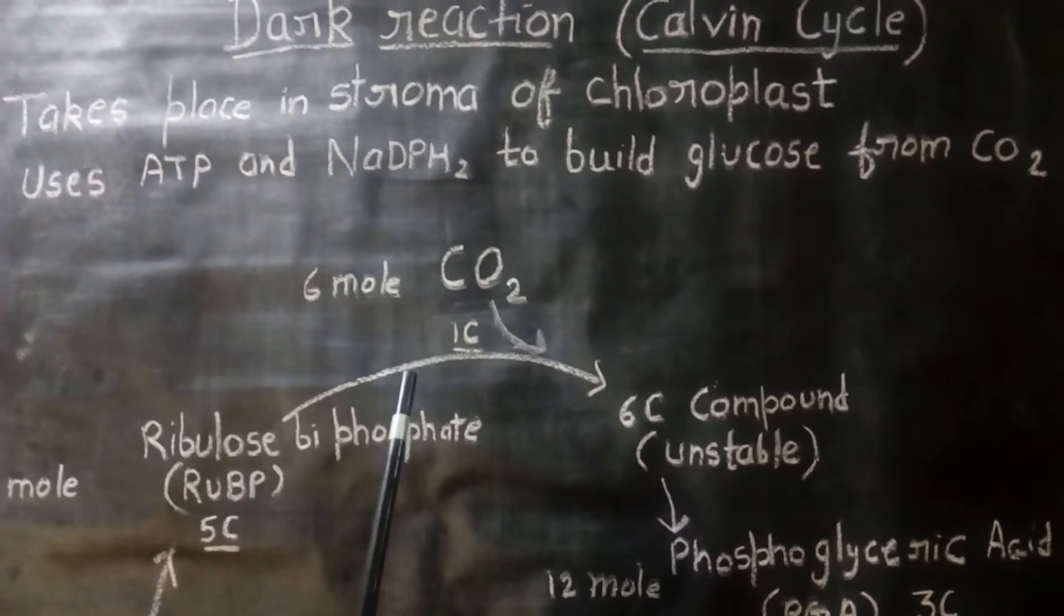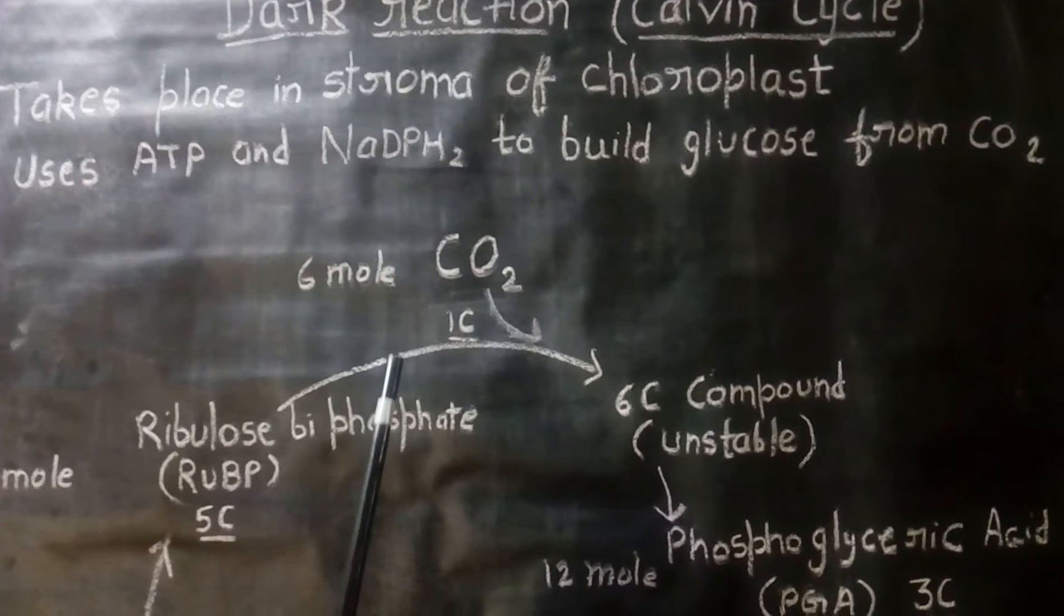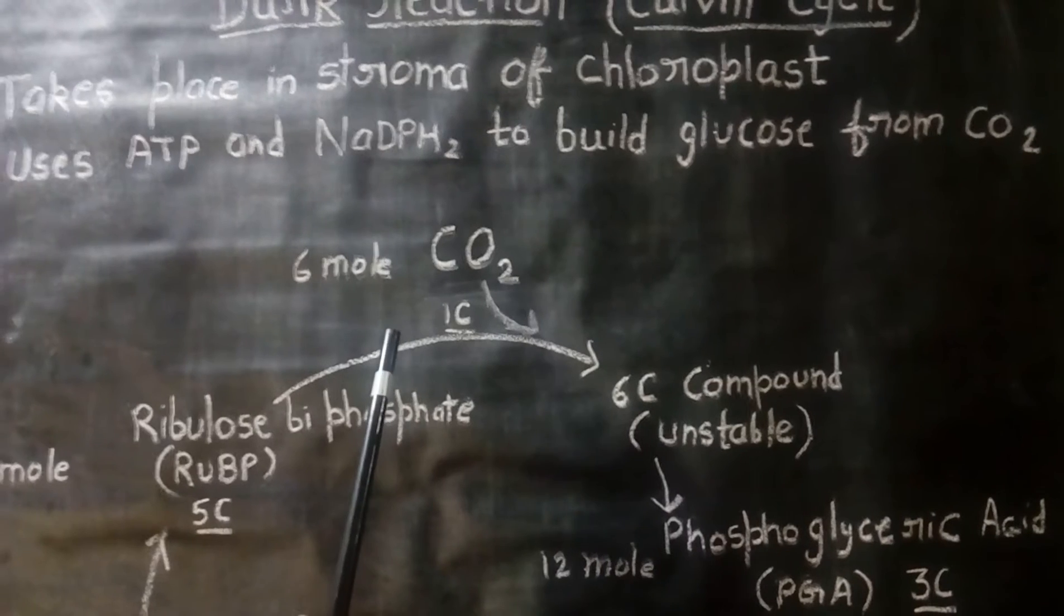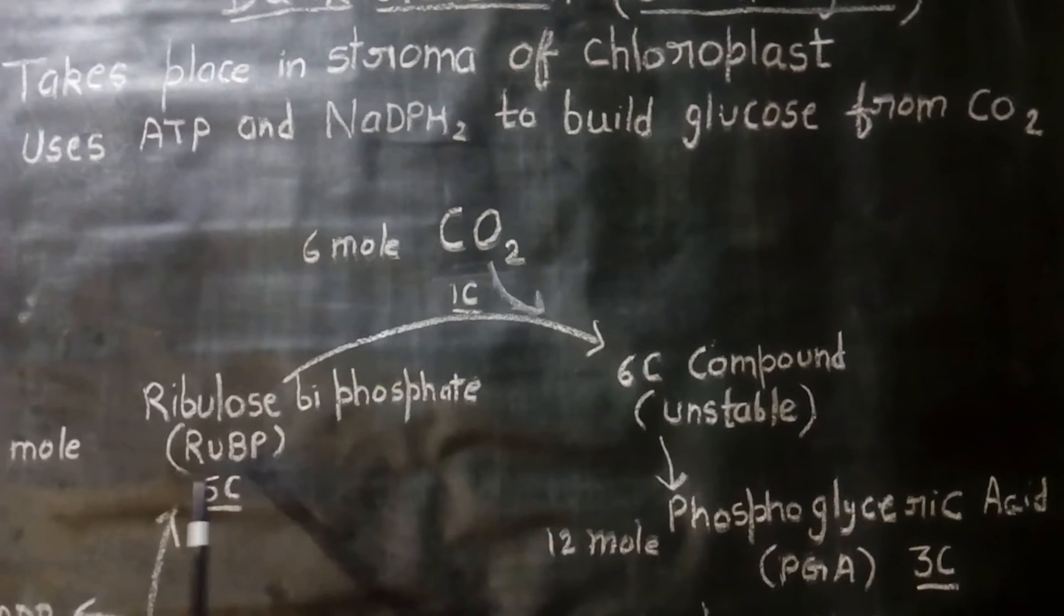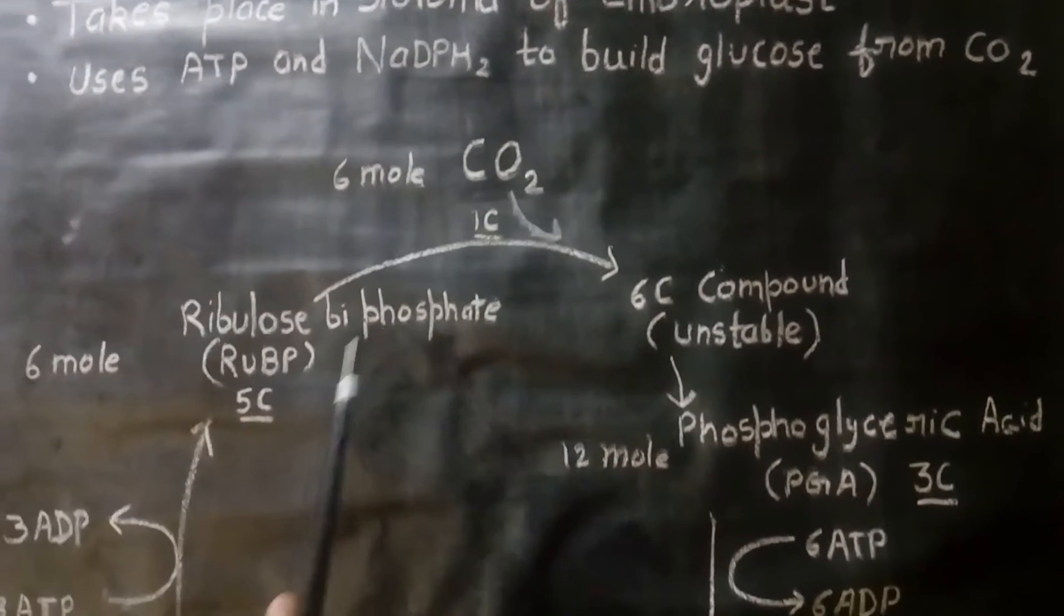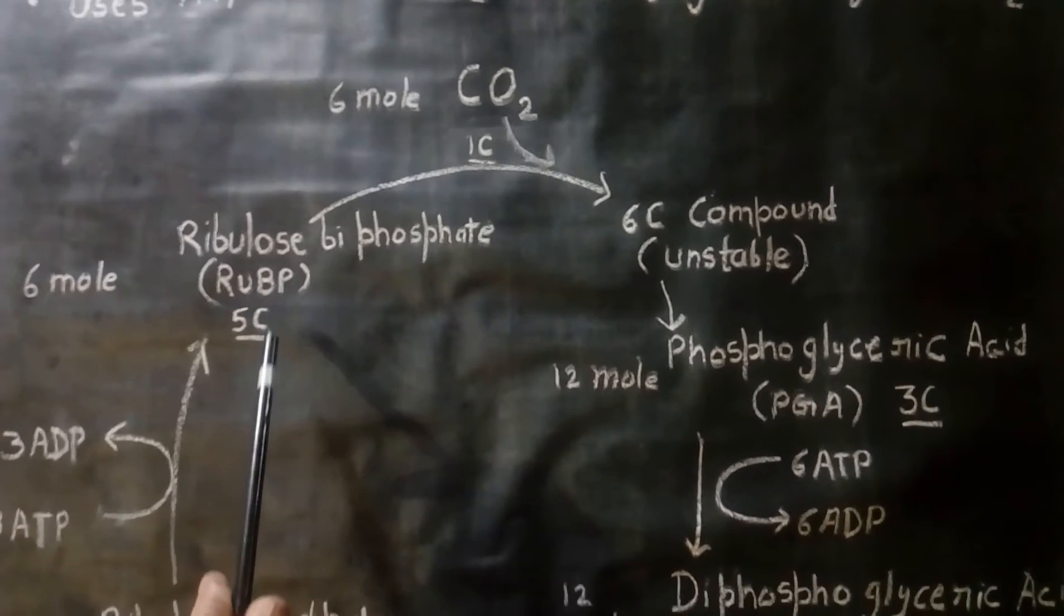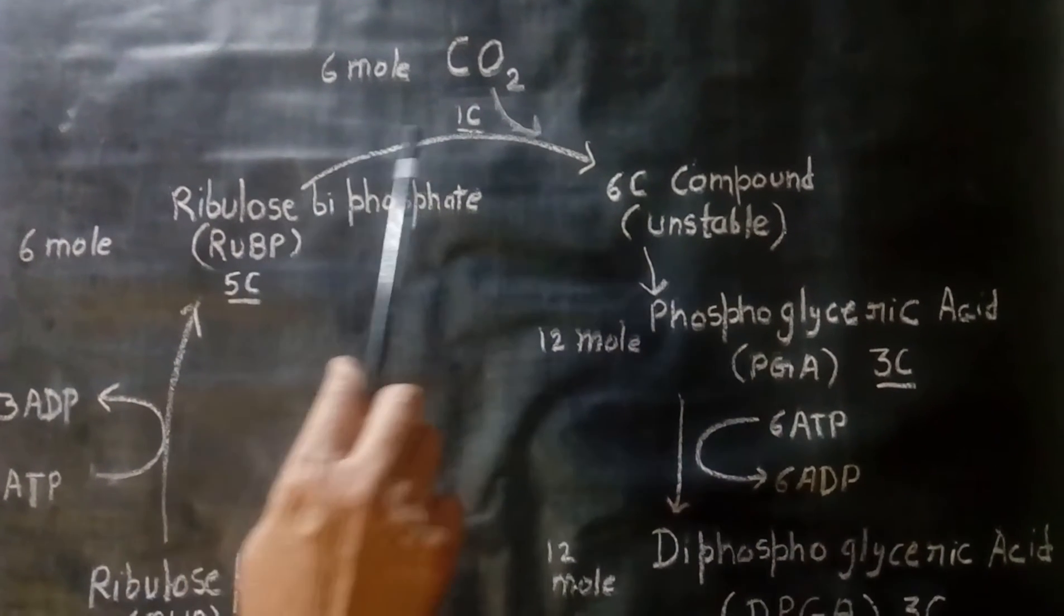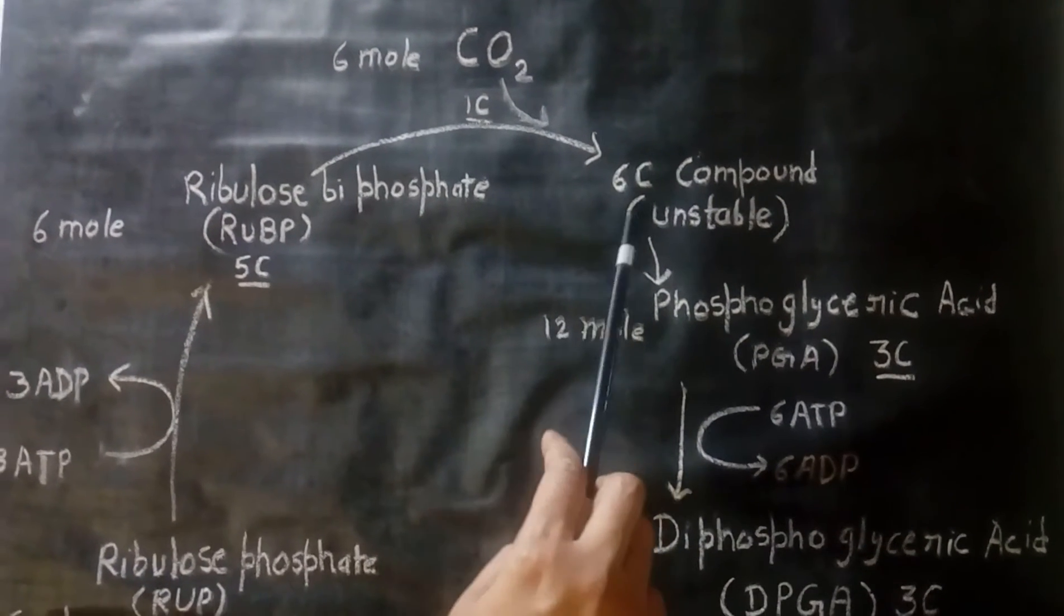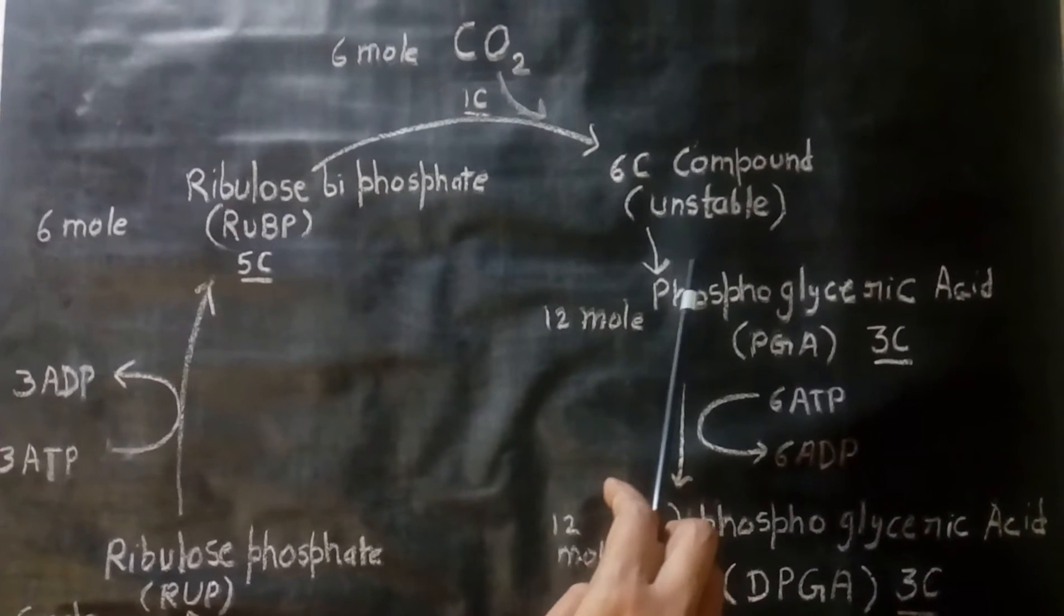The reaction starts with one carbon atom compound CO2. This molecule reacts with ribulose bisphosphate, which is a 5-carbon molecule. Both compounds react and form a 6-carbon compound that is unstable.